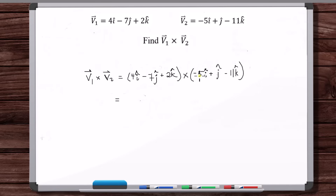So we start with 4i-hat cross minus 5i-hat. When you think about the formula for the cross product, it's the magnitude of the first vector times the magnitude of the second vector times the sine of the angle between them. Anytime you have the same unit vector crossed with itself — i-hat cross i-hat, or positive i-hat cross minus i-hat, or j-hat cross j-hat — the sine of the angle is zero. So 4i-hat cross minus 5i-hat is zero.